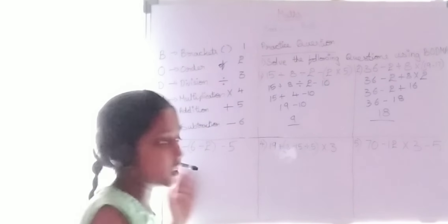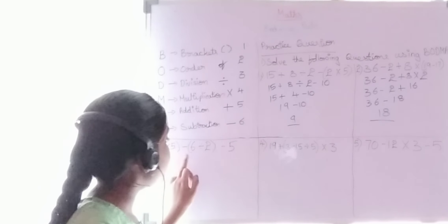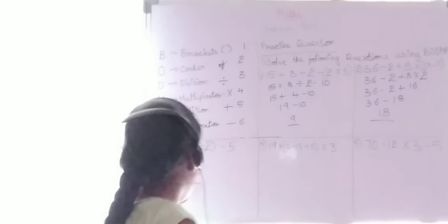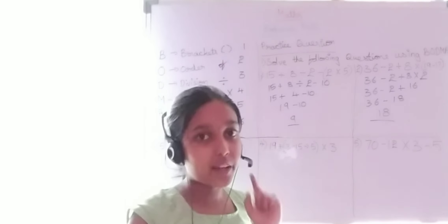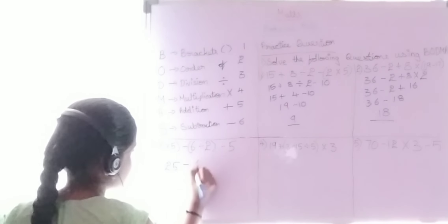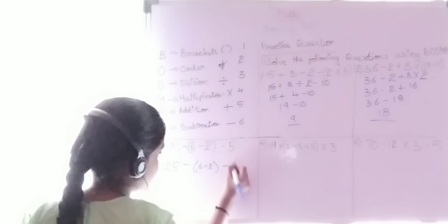Third question: (5 × 5) − (6 ÷ 2) − 5. We have two brackets, so solve the first bracket: 5 × 5 = 25. Then solve the second bracket: 6 ÷ 2 = 3. Now we have 25 − 3 − 5.